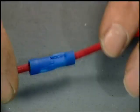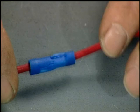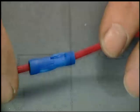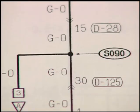Splices differ from connectors and junction blocks in that they join wires with a solder joint. Splices are often used to join several wires to a common ground, and are usually insulated with heat shrink tube wrapping. Where shown in wiring diagrams, splices are usually shown with the letter S before a number, indicating that it is a splice and not a connector.